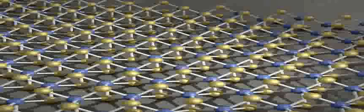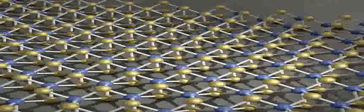MoS2 is especially notable in its monolayer form. In contrast, tungsten diselenide, WSe2, exhibits unique photoluminescence, making it suitable for optical applications.